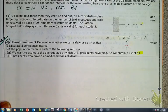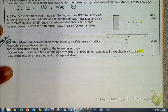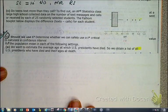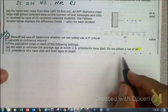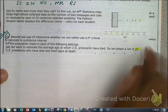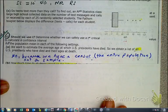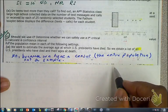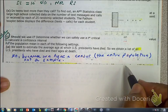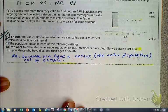Go to page 11 of your notes: 'Should we use T?' Looking at part A — this is all precedents, and all precedents is a census. Remember, T's are based on sample information. We have the entire population — that's not a sample — so that's why we can't use T.